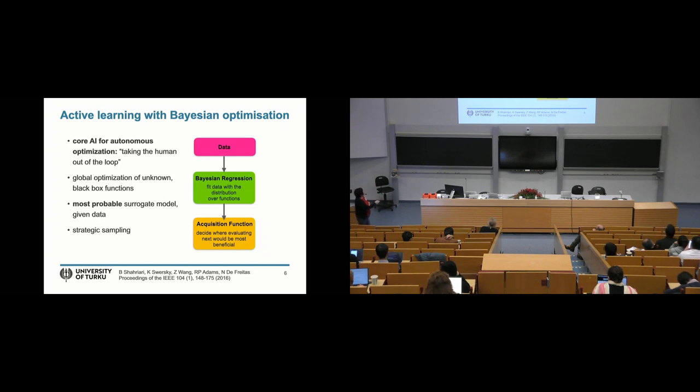Step number one is to do Bayesian regression which is fitting this data with a distribution of functions in a Bayesian way. And I will explain in a second how that works. And then after this step is done we can use the outcome to build an acquisition function. And this tells us where in the search space we should get the next data point for maximum information back into the model. And this is then what we do. We evaluate this, we put it back into the data and then this two-step process is repeated over and over again until convergence.